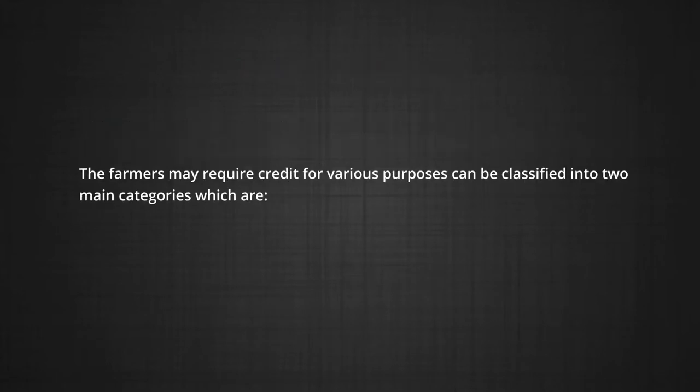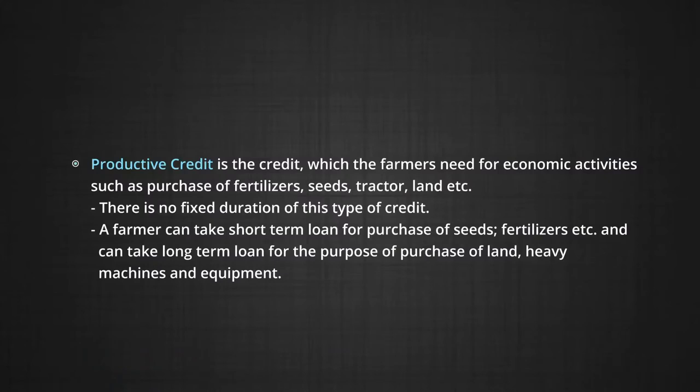Credit for farmers can be classified into two main categories. Productive credit is the credit which farmers need for economic activities such as purchase of fertilizers, seeds, tractor, land, etc. There is no fixed duration of this type of credit — a farmer can take a short-term loan for purchase of seeds and fertilizer, and a long-term loan for purchase of land, heavy machines, and equipment.